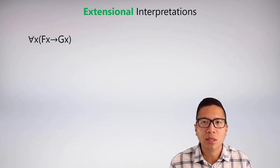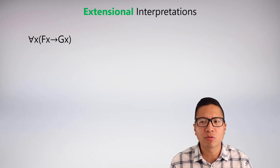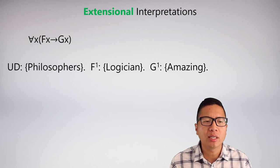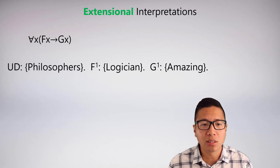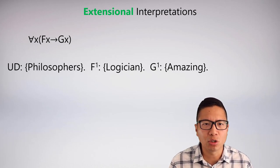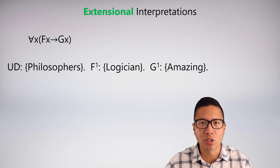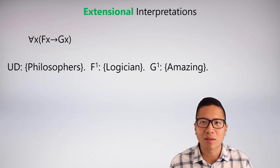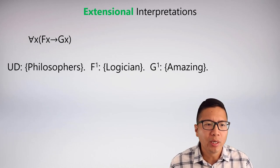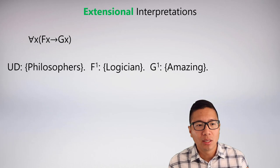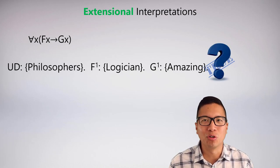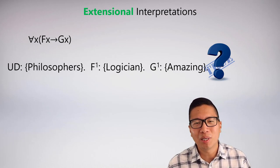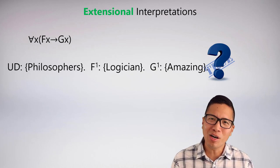We'll use set notation to talk about extensional interpretation. For 'for all x, Fx → Gx,' one extensional way — though somewhat cheating — is to say the UD is the set of philosophers, F is the set of logicians, and G is the set of amazing things. This is cheating because technically I should list every philosopher, every logician, and everything amazing. What does the sentence say? For all philosophers, if you're a logician then you're amazing. Is that true? Bertrand Russell was an amazing logician in many ways, but also did foolish things. Frege was a famous logician and philosopher, but had some socially problematic views.